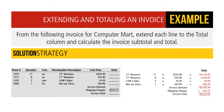From the following invoice for Computer Mart, extend each line to the total column and calculate the invoice subtotal and total. Following our three-step process, we multiply the units or quantities times the merchandise cost, giving us a total for each line item. We then add each line item to get an invoice subtotal of $8,769.30. There are $244.75 of shipping charges added, for an invoice total of $9,014.05.